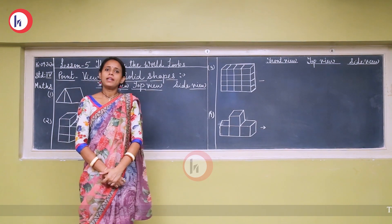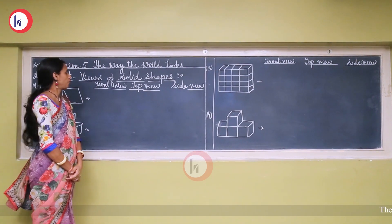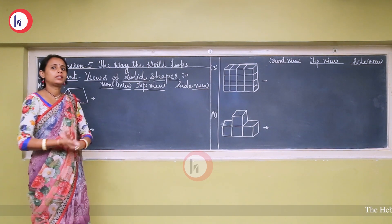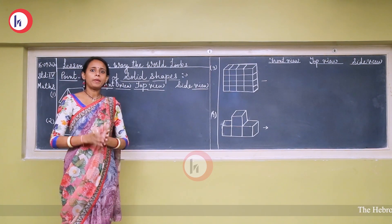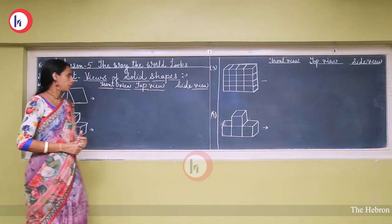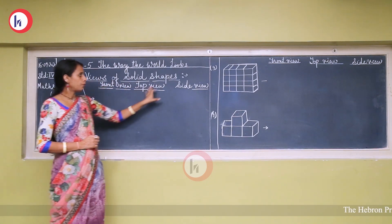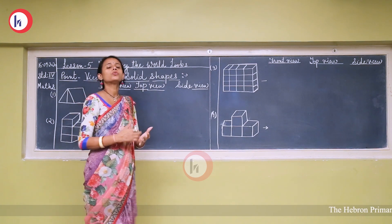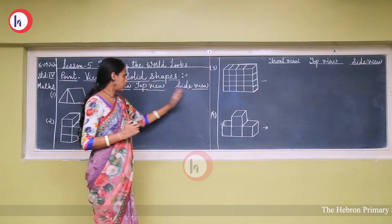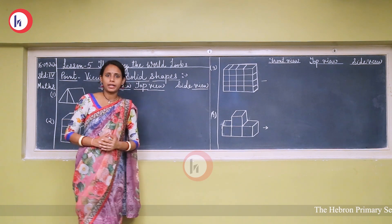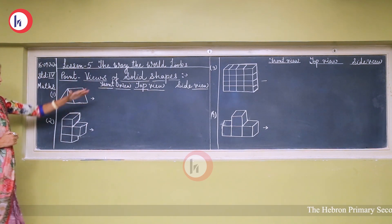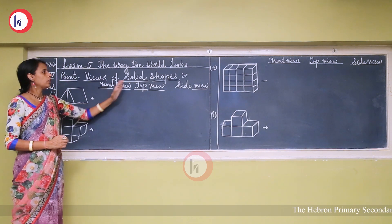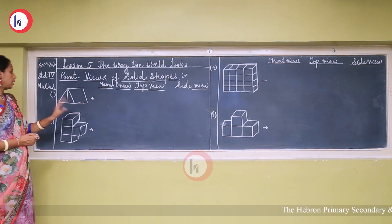Hello students. In our last session we started Lesson 5, 'The Way the World Looks.' We understood that there are four main possible views: front view, top view, side view, and back view. We also learned how to draw three views of a solid object — front, top, and side.